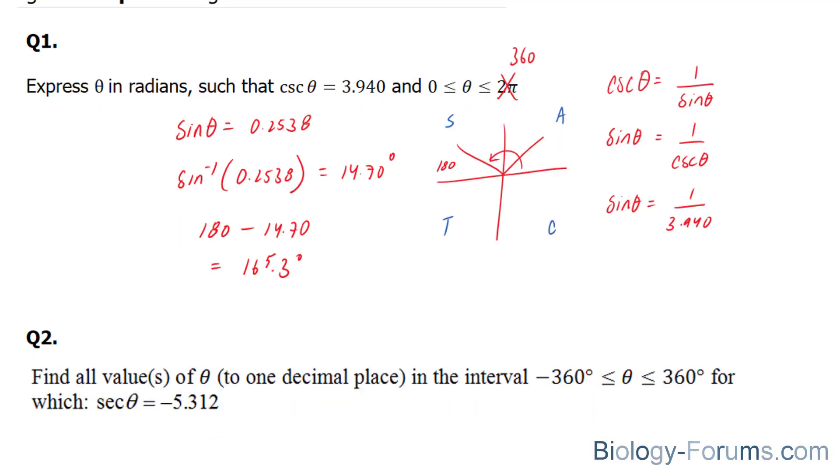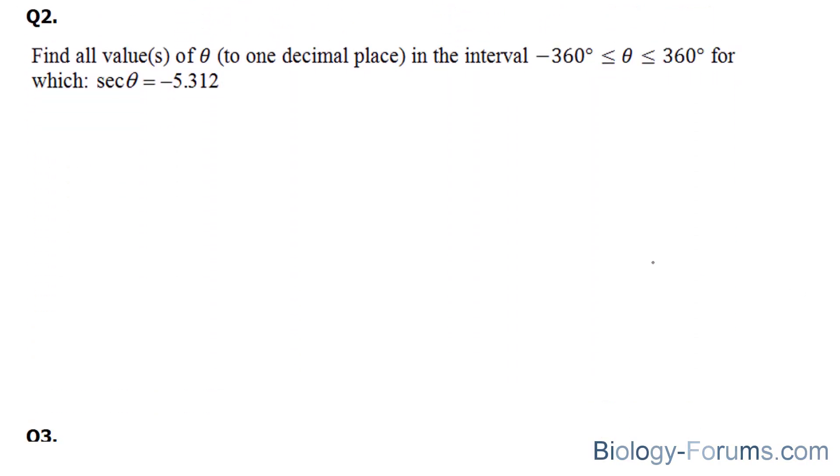Let's move on to question number two. It gets a little bit more challenging. Question two reads: find all values of theta to one decimal place between the intervals of negative 360 to 360 for which secant